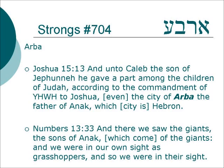Arba is also the name of a character who appears in Joshua 15:13 — And unto Caleb the son of Yifunah, he gave a part among the children of Judah, according to the commandment of Yahweh to Joshua — even the city of Arba, the father of Anak, which city is Hebron. So we read about a city called Kiryat Arba. Numbers 13:33 — And there we saw the giants, the sons of Anak, which come of the giants, and we were in our own sight as grasshoppers, and so we were in their sight. So Arba is the father of Anak, and we see the sons of Anak are giants, so we come to the conclusion that Arba was also a giant.